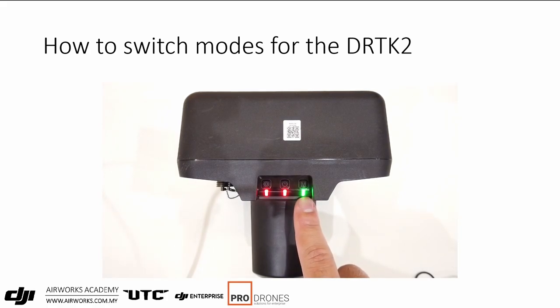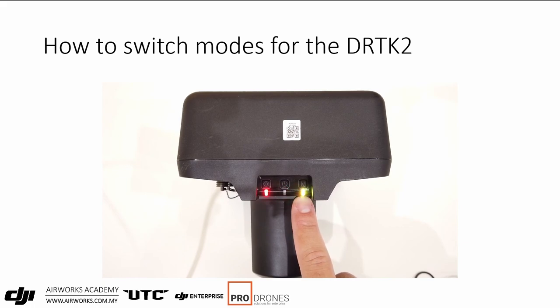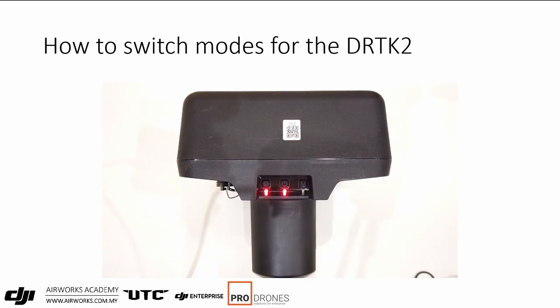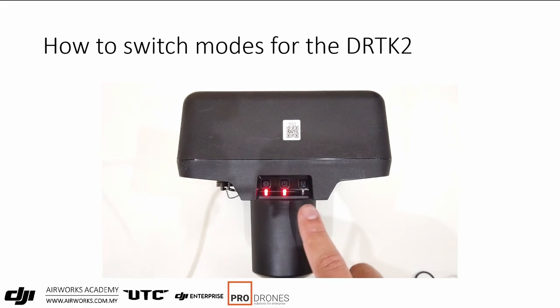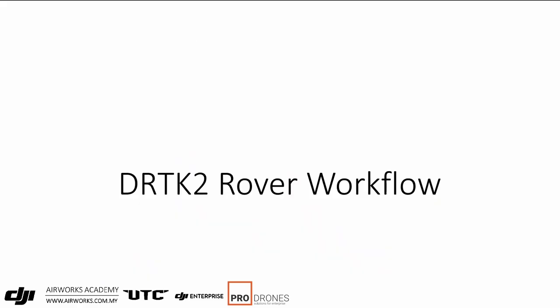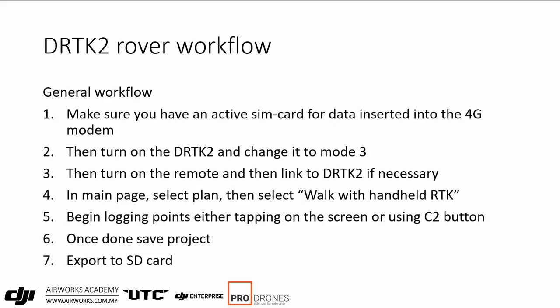Mode 3 allows you to use the DRTK2 as a rover. To do this: ensure you have a 4G SIM card in the modem and plug it into the remote, make sure you have a CORS network subscription, turn on the DRTK2, switch it to mode 3, and link the remote to the DRTK2. Then in the main menu, select Plan, then Work with Handheld RTK, wait for accuracy to come down, and press C2 or tap the screen to start logging positions.